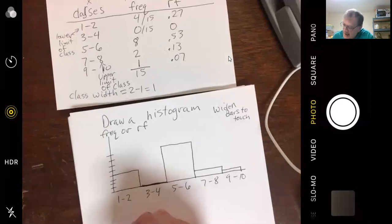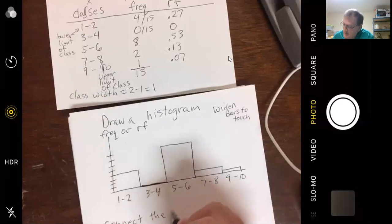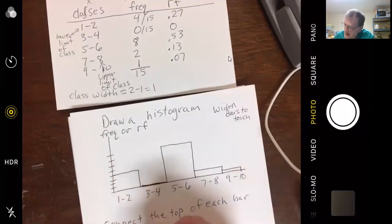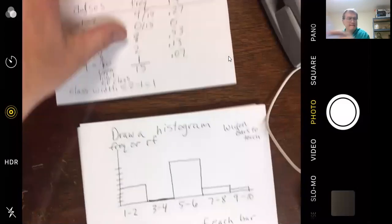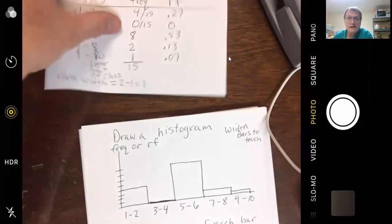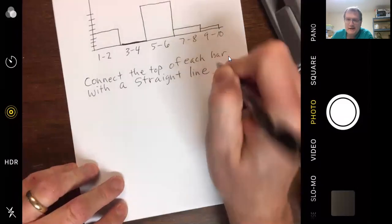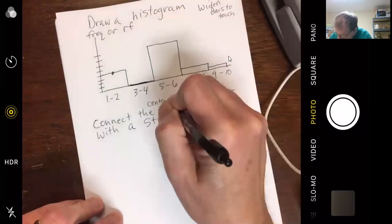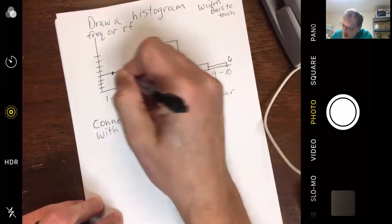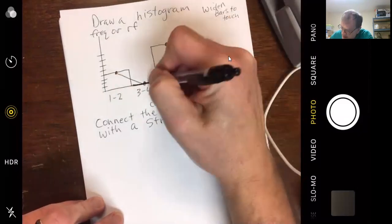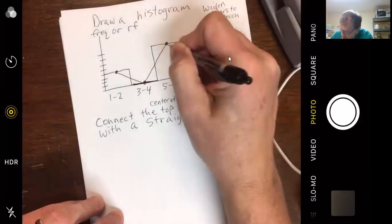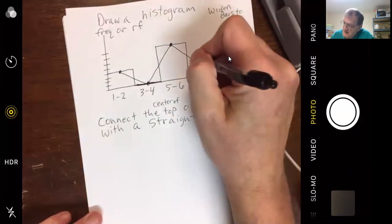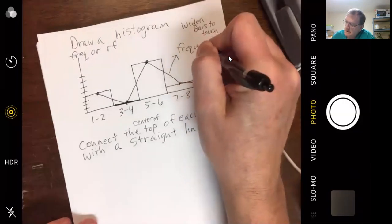Okay. We're going to connect the top of each bar with a straight line. We've got in the center. Actually, the center of the top. Right there to right here, and I draw straight lines. Center there, straight line. Center here, straight line. Center here, straight line. This sequence of straight lines is called a frequency polygon.